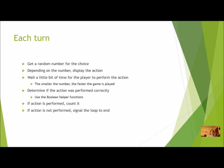With if statements, if it's one, use a print statement to display the action — the Finch won't speak for us. Then have some kind of a sleep delay for the person to perform the action. The smaller the number, the faster the game and the harder the difficulty. Then inside your turn, determine if the action was performed — this is where you use your boolean helper functions. If the action is performed, increment your counter; if not, update your boolean control variable so the loop ends.